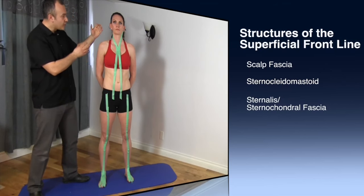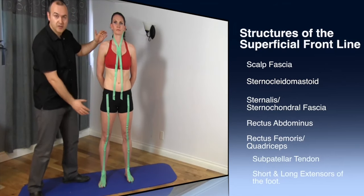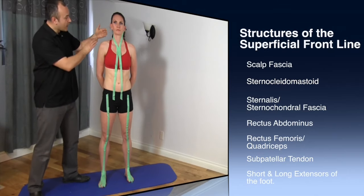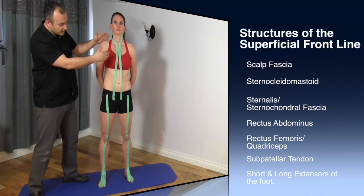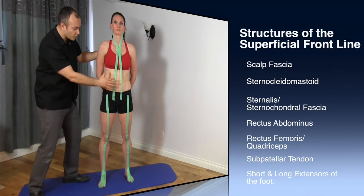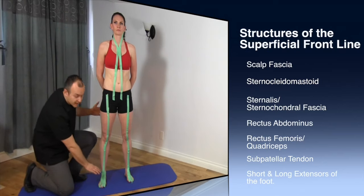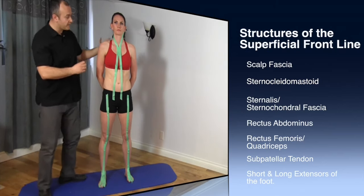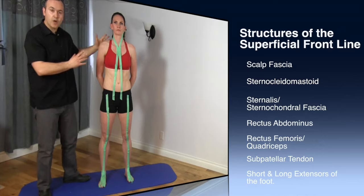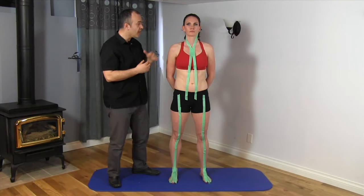What's important is that you can see the interrelationships between the various areas of the body. This connects musculature in the neck — the sternocleidomastoid and the base of the skull — to the chest, the sternalis, through the torso, the abdominal musculature, all the way down to the tops of the feet. When we look at the superficial front line, it's involved in a lot of dysfunctions that involve flexion of the body.